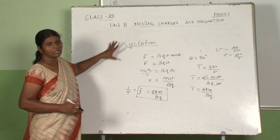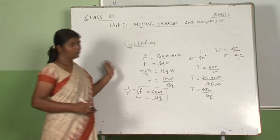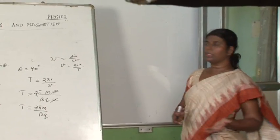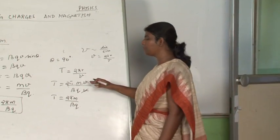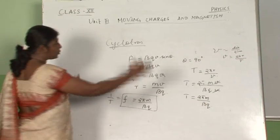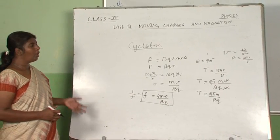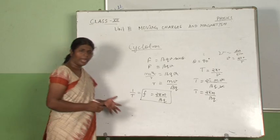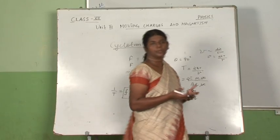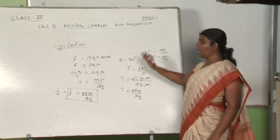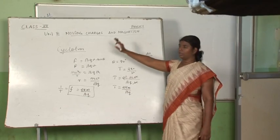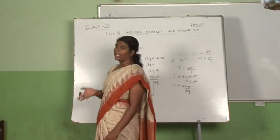The cyclotron is an accelerator to accelerate charges. We are going to take a proton, whose mass is greater than that of the electron. Why do we accelerate a proton or charged particle? We need accelerated charged particles for nuclear experiments — to hit a target. That is why we construct a charge accelerator.